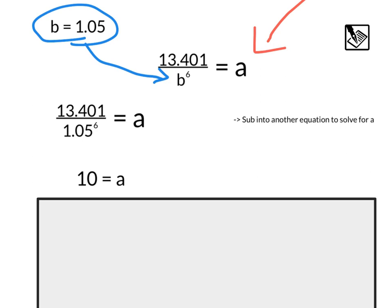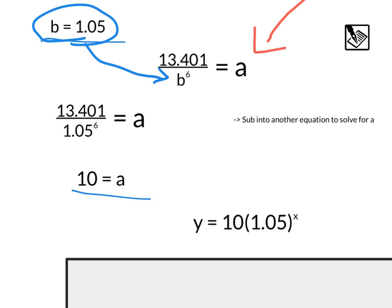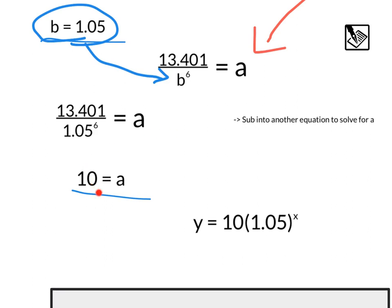Now that we know our a value, and we know our b value, our last thing we need to do is simply substitute those values into our general equation, and we'll have y equals 10, our starting point y-intercept, times our multiplier, b, 1.05 to the x power. Alright, everyone, I hope this video was helpful.